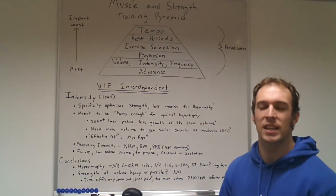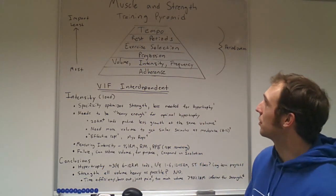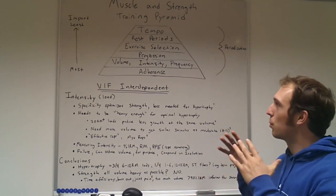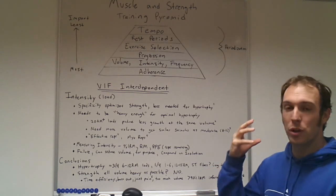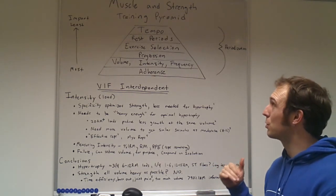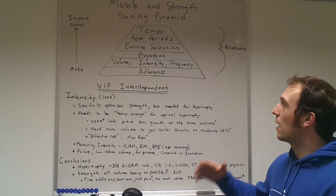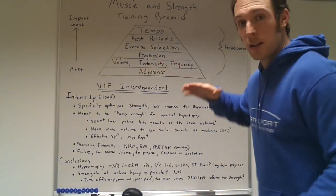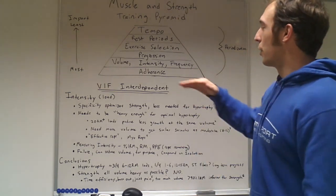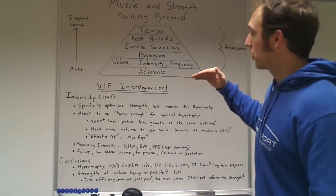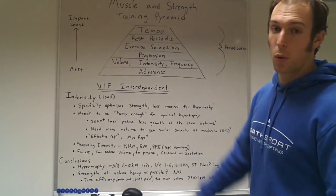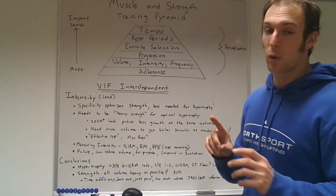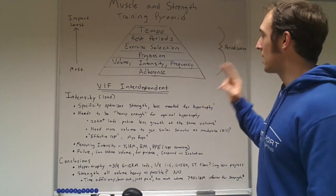Alright folks, we are back for the second installment of the Muscle and Strength Training Pyramid, where we are organizing training into a logical priority system to help you reach your goals. Much like the nutritional pyramid, we have a system based on priorities — the bottom is the most important foundation and as we move to the top it becomes least important. We are on episode 2 after covering adherence last week. Today: volume, intensity, and frequency.